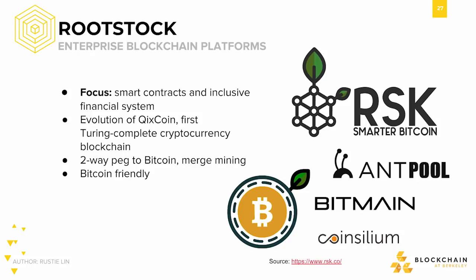Rootstock, a Bitcoin sidechain, aims to integrate smart contracts with the Bitcoin blockchain. It has a two-way peg — a method by which data can be transferred between a main chain and a sidechain — which will be explained in the next lecture. Rootstock developed out of QixCoin, the first cryptocurrency blockchain with a Turing-complete language meant to enable peer-to-peer games. The QixCoin staff added security to their platform through merge mining, which reuses the mining power of the main chain on a sidechain. Rootstock also aims to increase scalability using sharding techniques and creating blocks every 10 seconds instead of every 10 minutes.